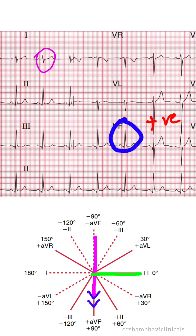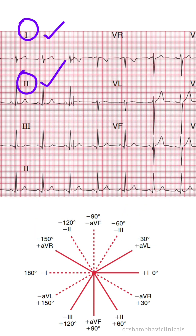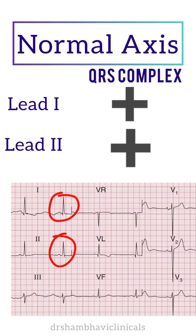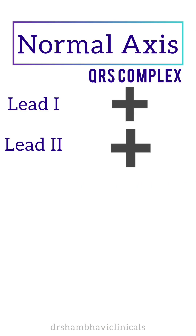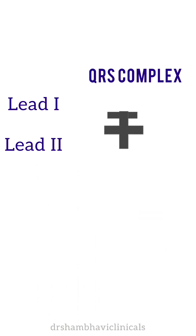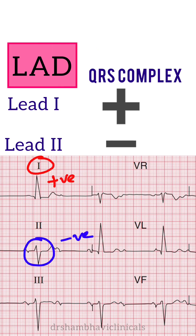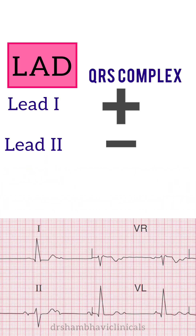Now the most important trick to identify axis deviation instantly. You simply need to look at only two leads: lead 1 and lead 2. In case of a normal axis, the QRS complex is predominantly positive in both these leads. If the QRS complex is predominantly negative in lead 1 and positive in lead 2, then it's a right axis deviation. While if the QRS is predominantly positive in lead 1 but negative in lead 2, then a left axis deviation is present.